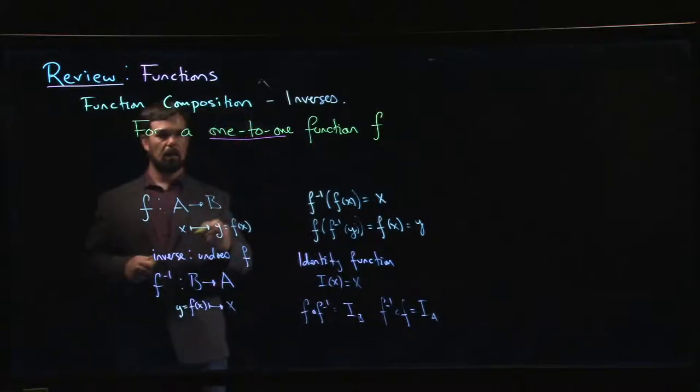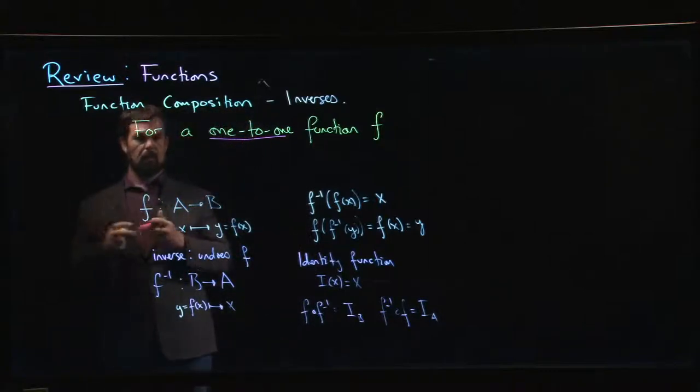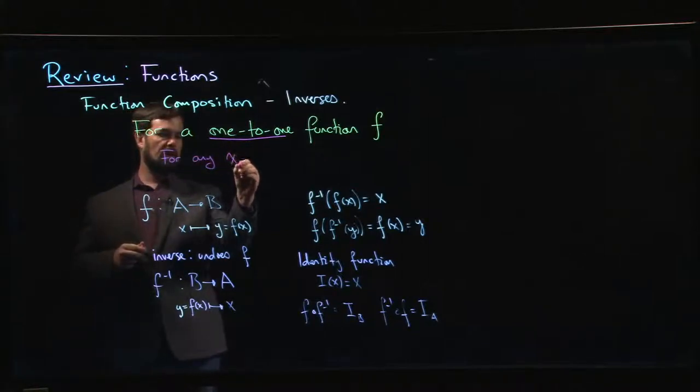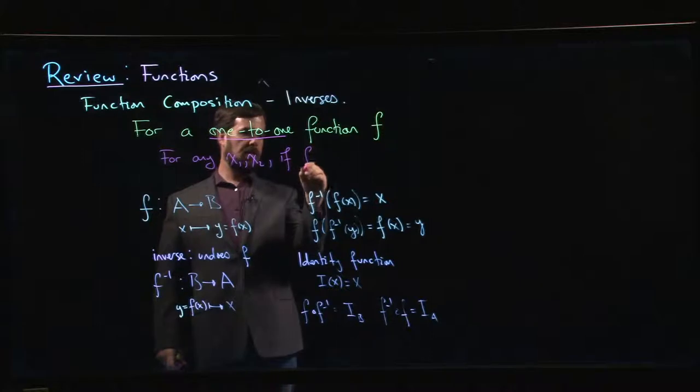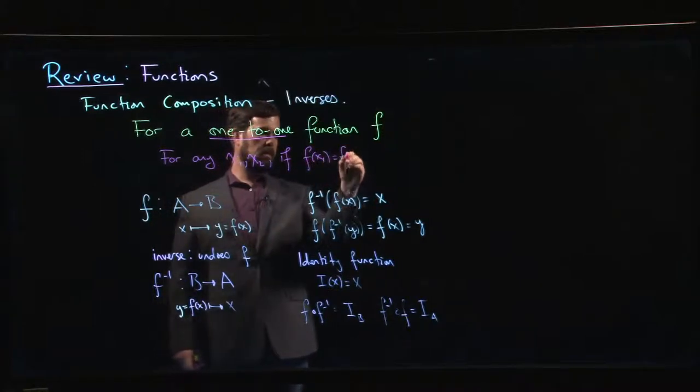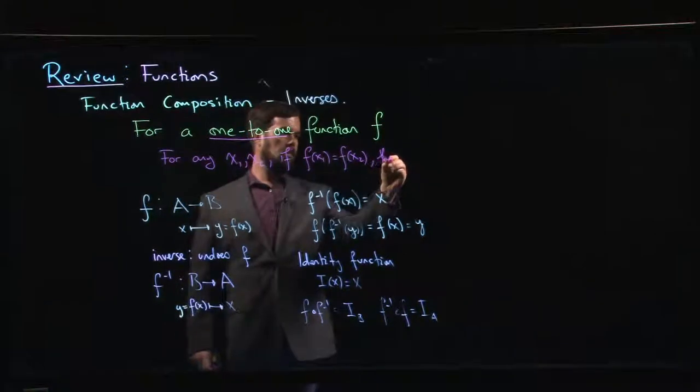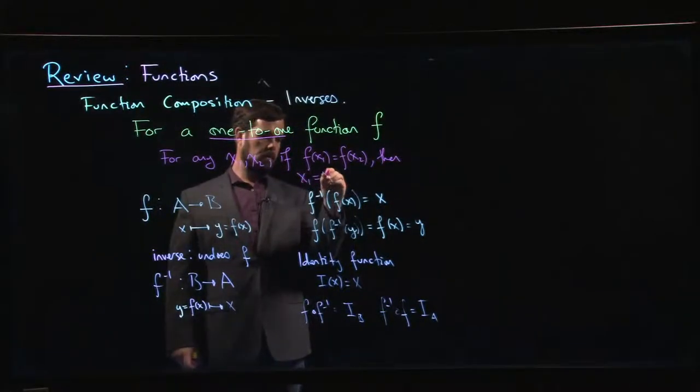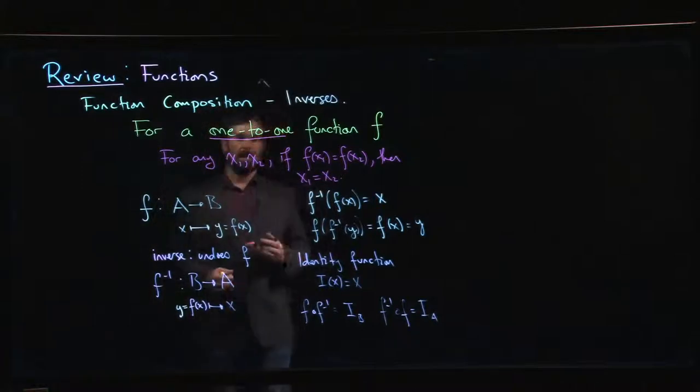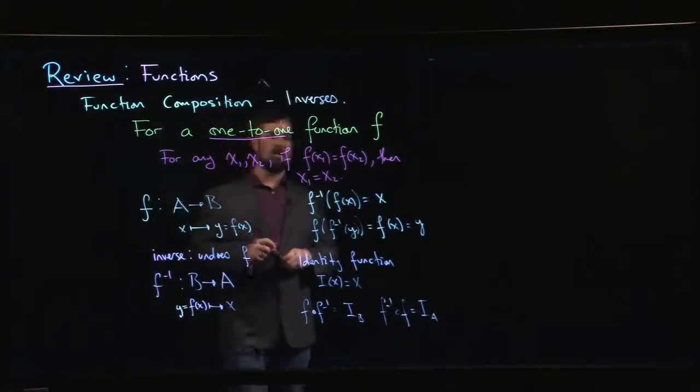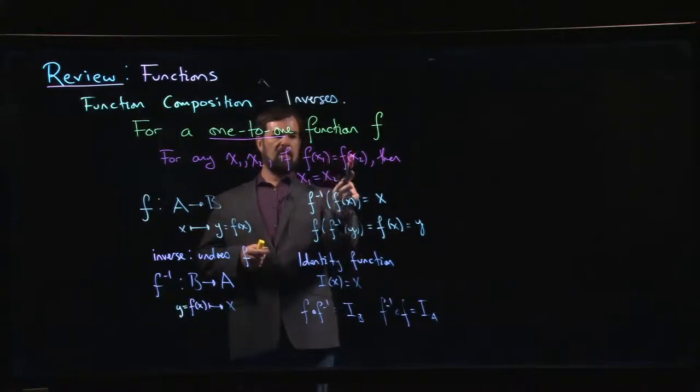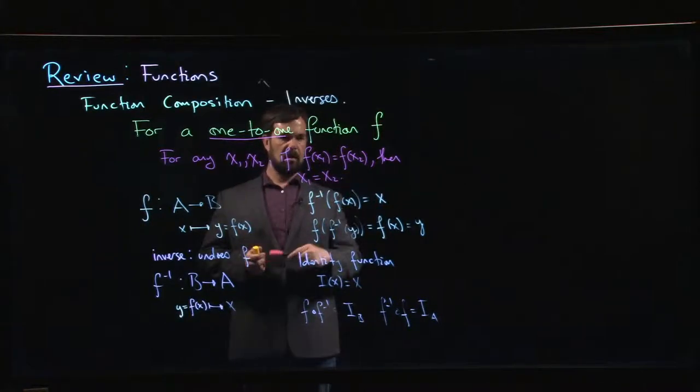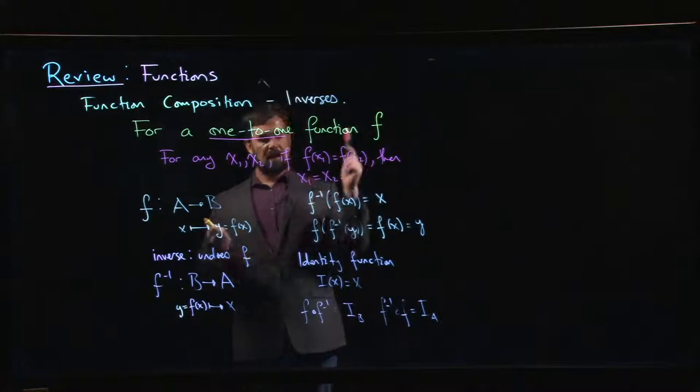So remember that one-to-one means that for any possible inputs, let's say x1 and x2, if f of x1 equals f of x2, then x1 equals x2. And this is a fancy way of saying that you can't have the same output for different inputs. So if I have two outputs that are the same, then they came from the same input.